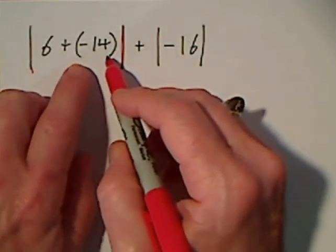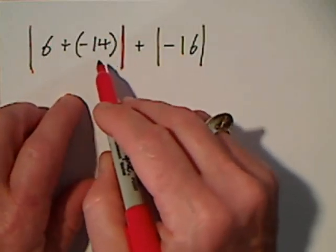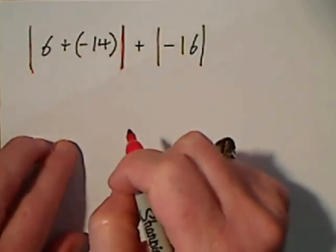Parentheses are grouping symbols as well, but within this set of parentheses there's nothing to solve. It's just a negative 14 sitting in there.